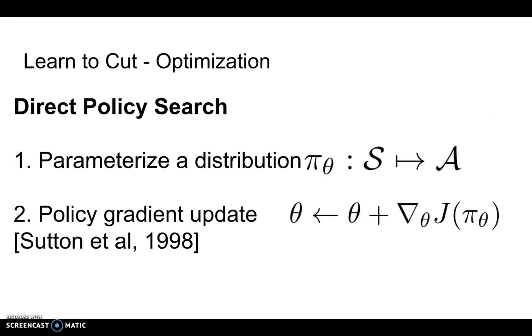To tackle the reinforcement learning problem, we'll carry out direct policy search. We'll parameterize the distribution which maps from state to action, and then we'll carry out iterative policy gradient update to iteratively improve the policy. We'll describe in detail how we carry out the parameterization and policy gradient update.